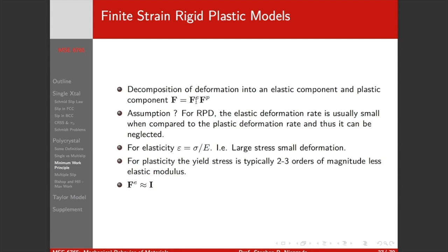For this rigid-plastic model, the elastic deformation rate is going to be very small compared to the plastic deformation rate. Once it starts yielding it's deforming primarily by plastic deformation — there's not a lot more elasticity happening. The stresses are the same but we're in a large deformation regime when considering crystal plasticity. The yield stress is typically two to three orders of magnitude less than the elastic modulus, so we can basically assume that the elastic part of the deformation gradient is identity — it's very small compared to the plastic part.